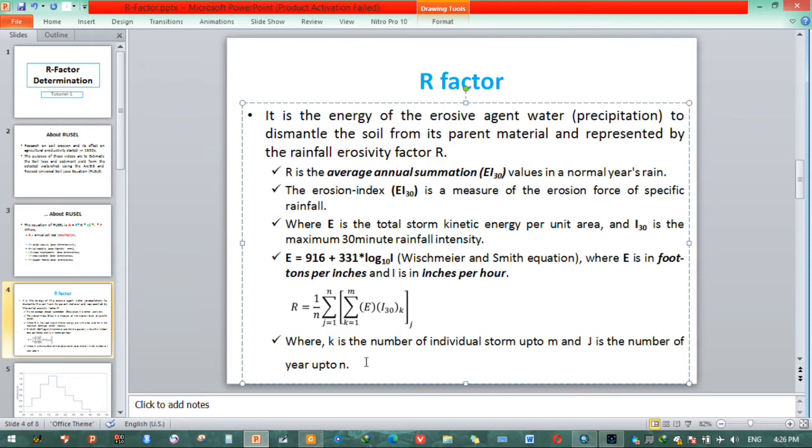First of all, we need to sum up those erosion indexes, that is certain rainfall intensity with having a storm kinetic energy. We need to sum up those values on a monthly or yearly basis. After summing up on a yearly basis, we need to divide those sum values by the total numbers of years. In such a way, we can determine this R factor.